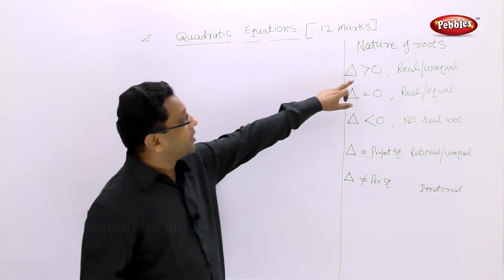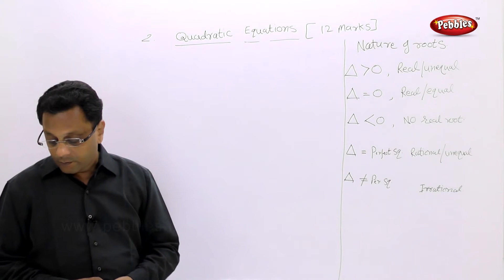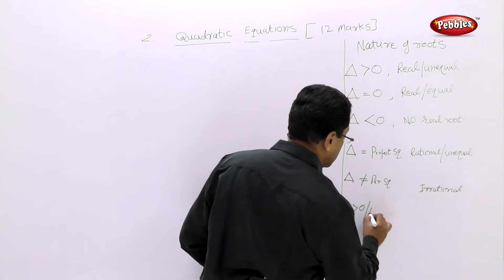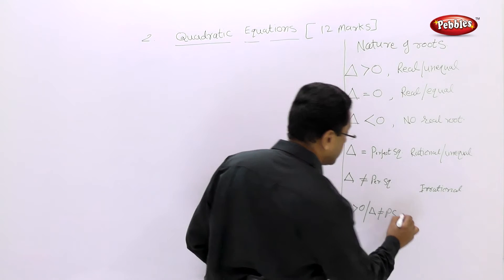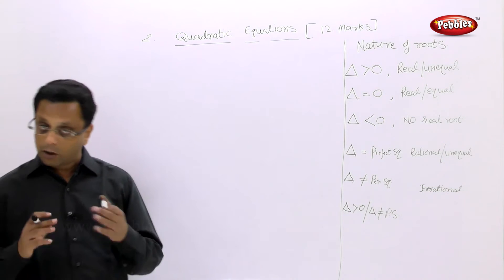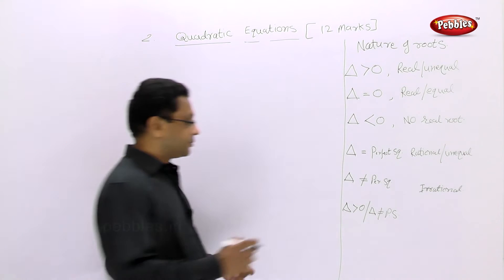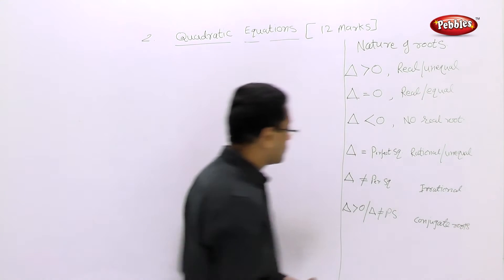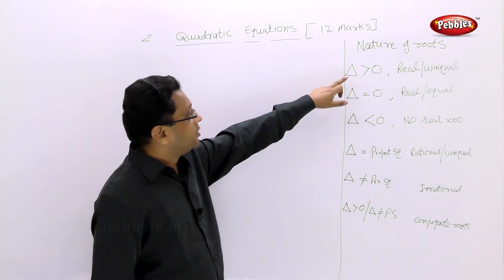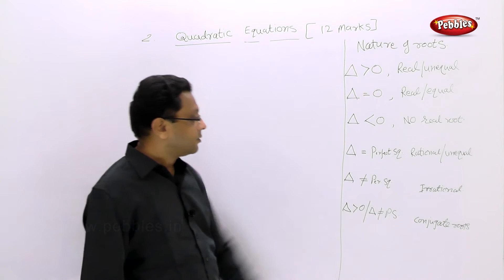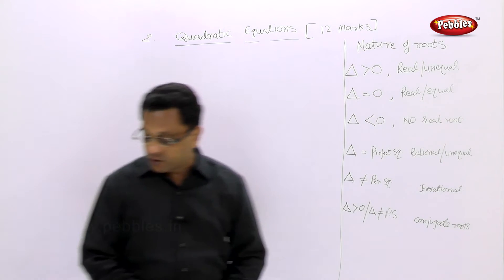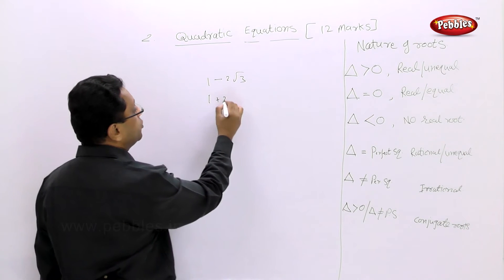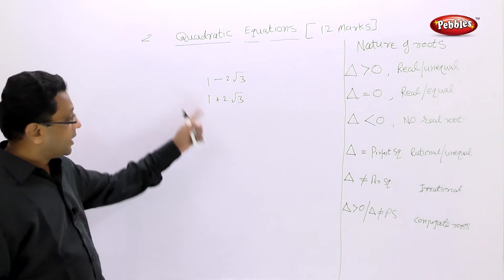Now, if delta is greater than 0 but delta is not a perfect square, then the roots are conjugates of each other. For example, if one root is 1 - 2√3, the second root will be 1 + 2√3. These are called conjugates of each other.